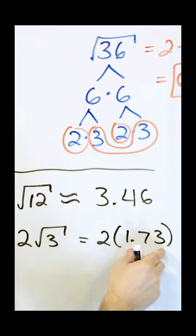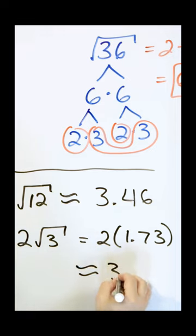When you put the square root of three in the calculator, you get this value. When you multiply it by two, you get approximately 3.46.